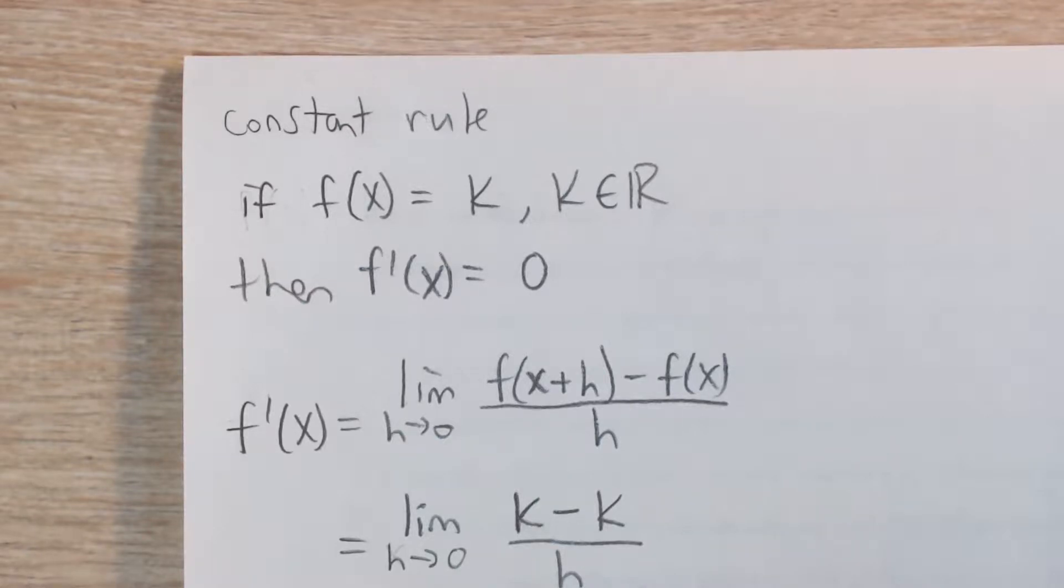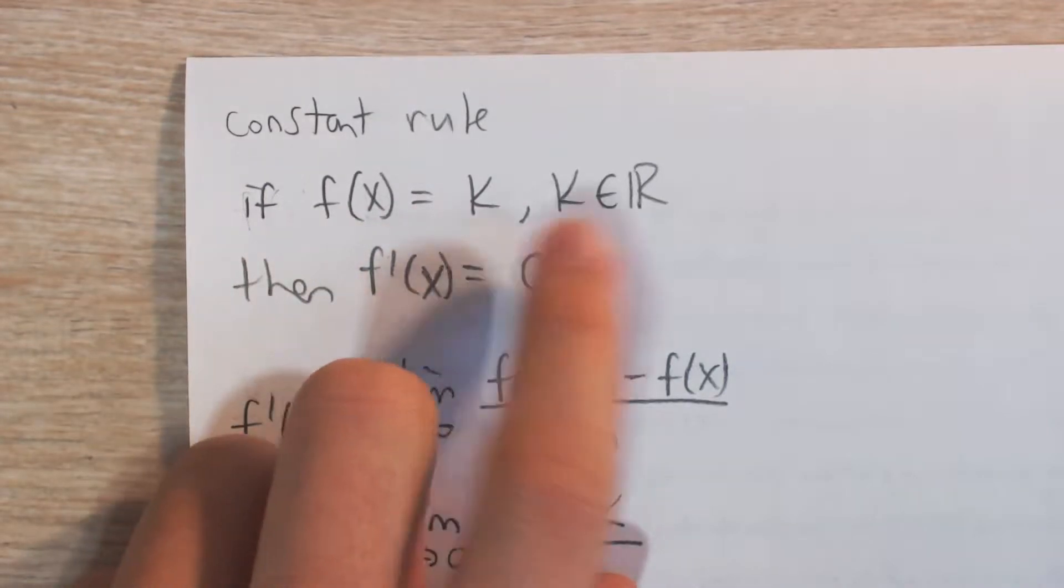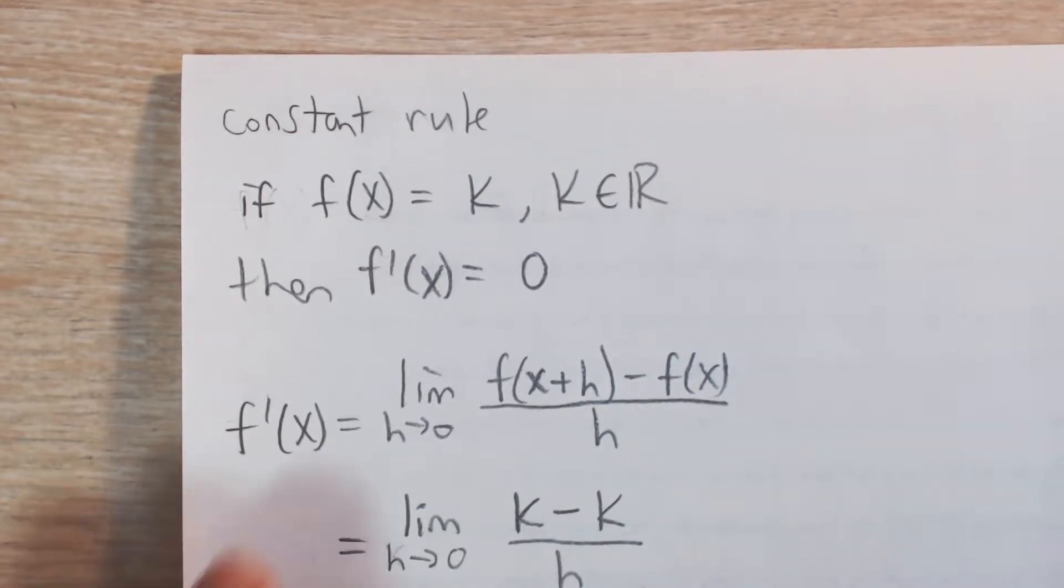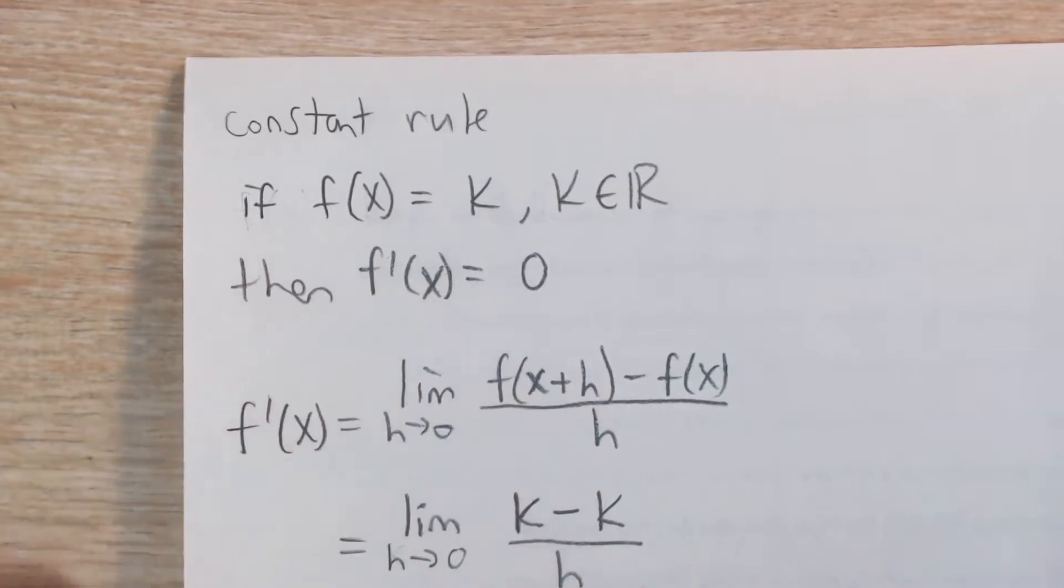So here we're going to prove the constant rule for derivatives, which says that if f(x) is equal to k, where k is a real number - in other words, a constant, like f(x) equals 5 or f(x) equals negative one-half - then the derivative of that function will be equal to 0.